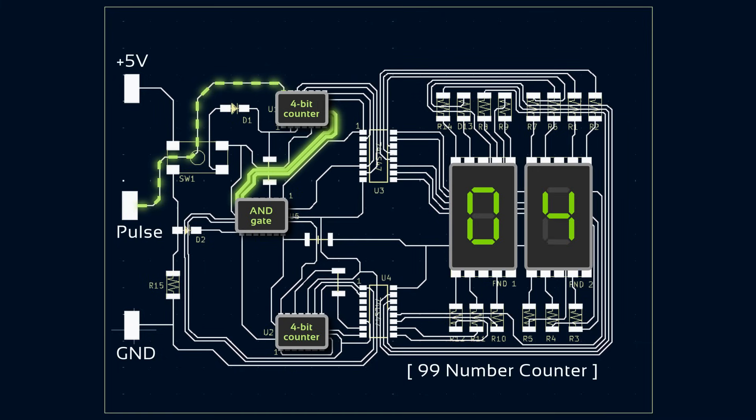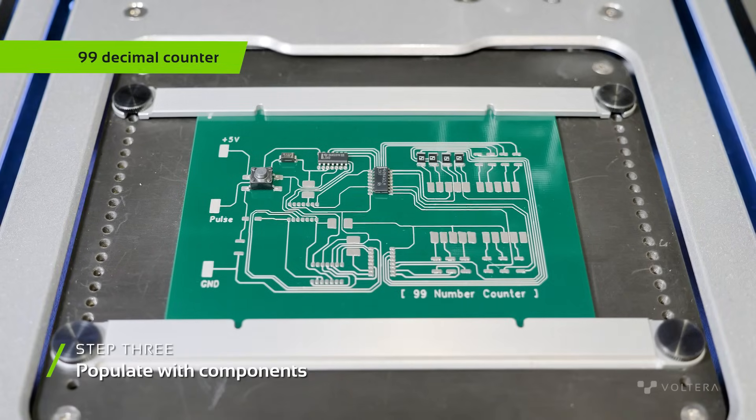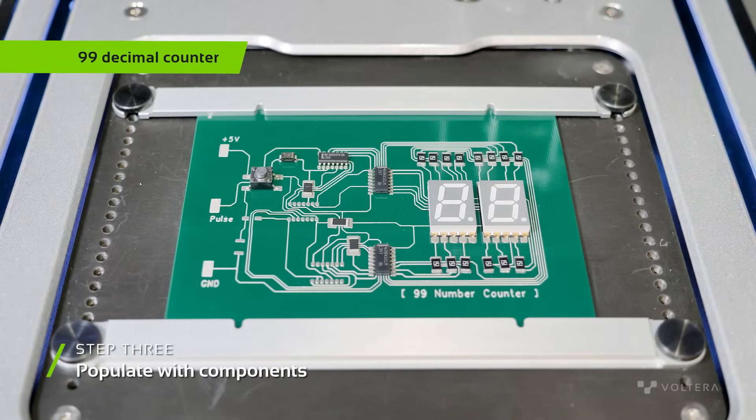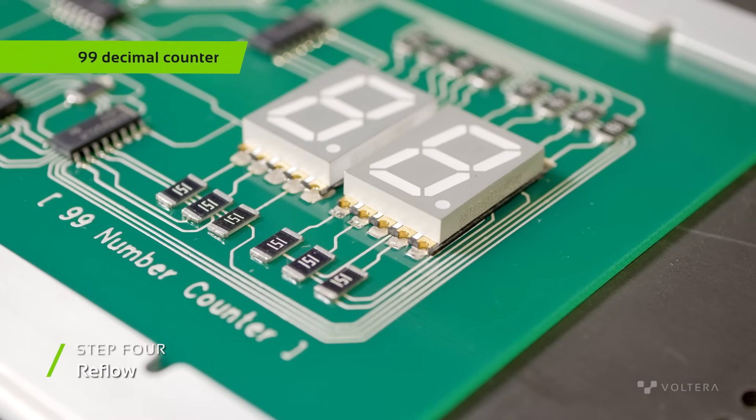When the first 4-bit counter resets from 9 to 0, its input signal triggers the second 4-bit counter to change the number in the 10s place. The signals from these two counters are sent to two separate seven-segment drivers, which decode the binary values and display the corresponding digits.